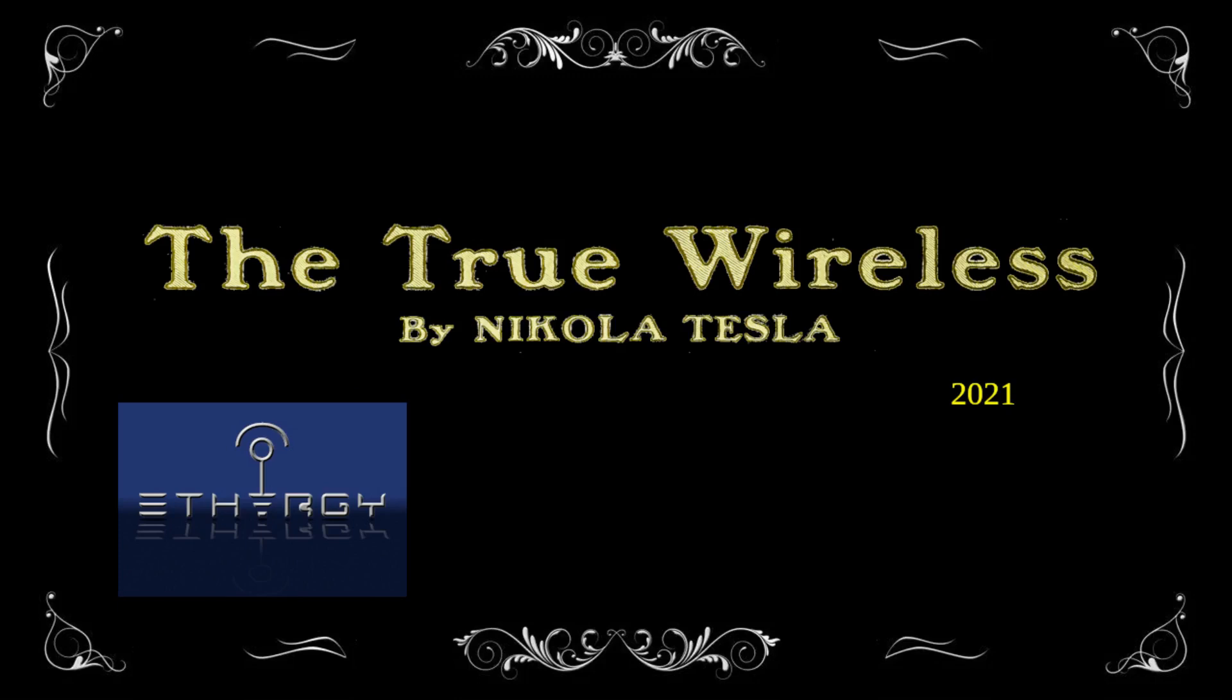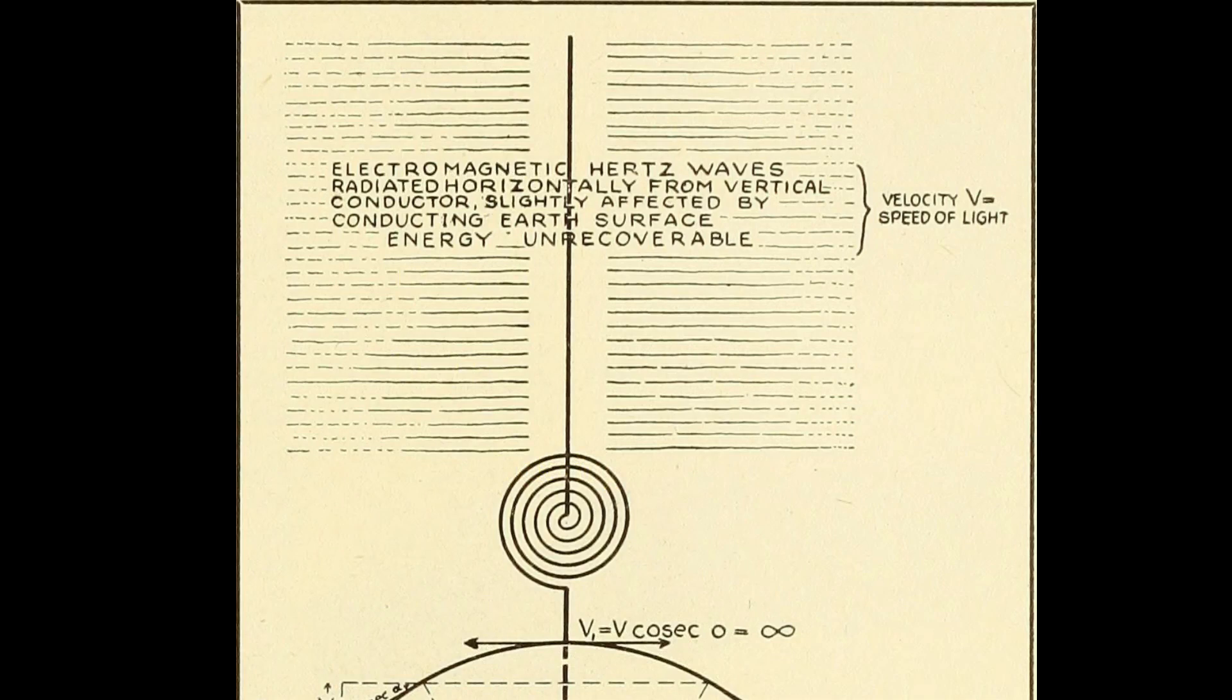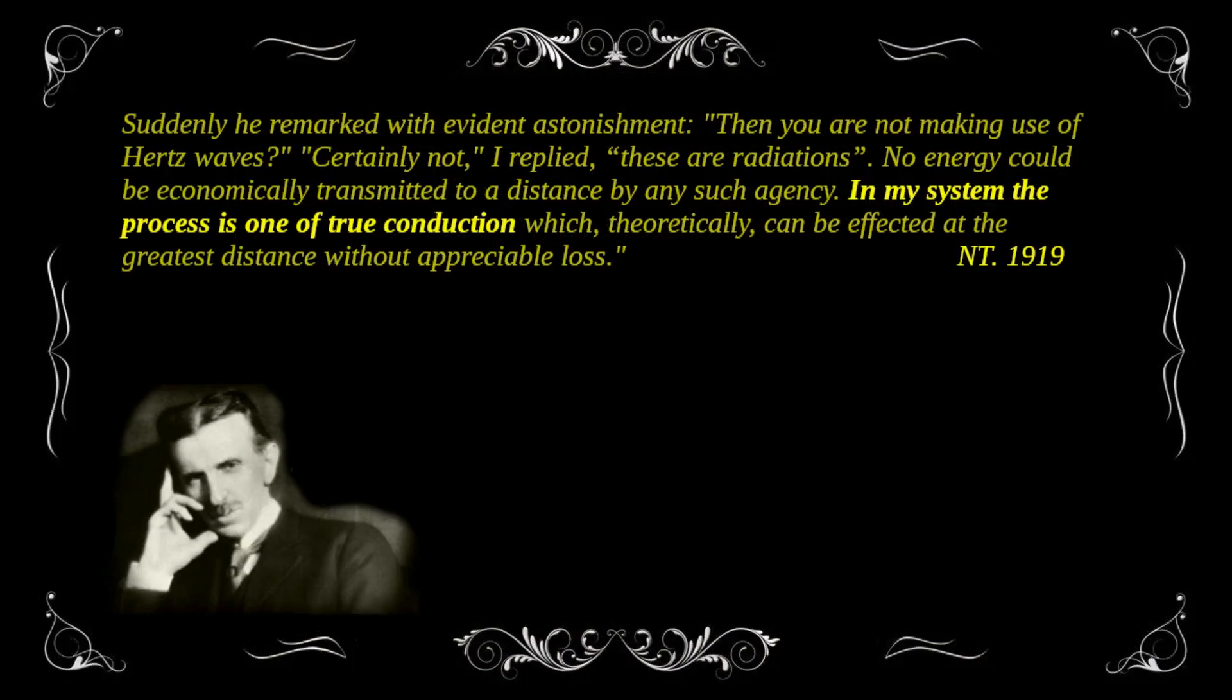In this video I'll present the basics of Tesla's wireless. When we hear the word wireless we usually think of electromagnetic radiation through the air. But radiation in general is highly inadequate for sending industrial amounts of energy over moderate to long distances. Therefore Tesla did not intend to use radiation but conduction.